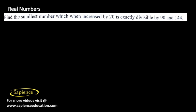Find the smallest number which when increased by 20 is exactly divisible by 90 and 144. The number that is exactly divisible by 90 and 144 is the LCM of the two numbers.